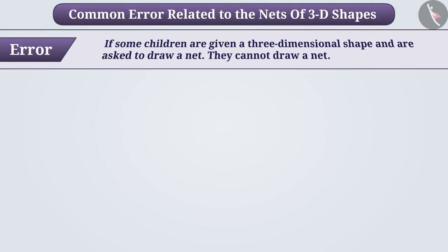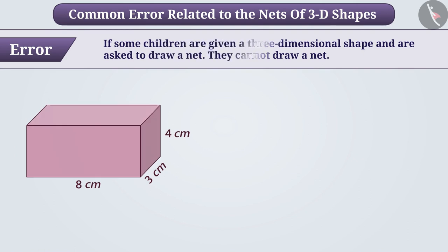Common error: If some children are given a 3-dimensional shape and are asked to draw a net, they cannot draw a net. Some children are unable to imagine which net is correct for the 3-dimensional shape shown. Therefore, they are unable to answer the given question.